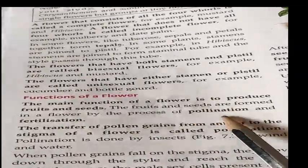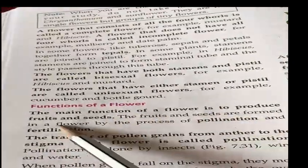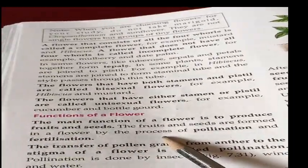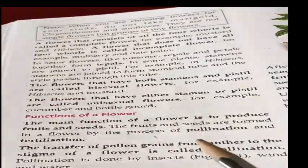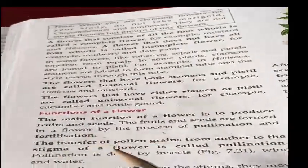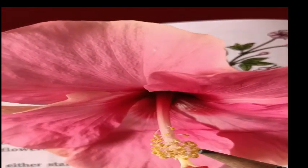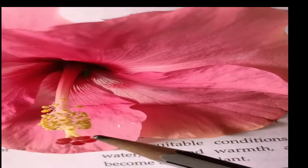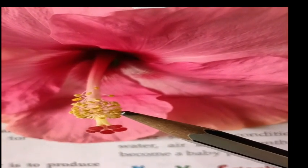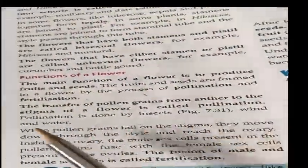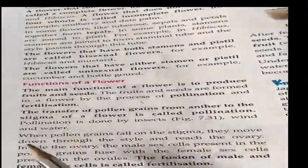Fruit and seeds are formed in the flower by the process of pollination and fertilization. The transfer of pollen grains from the anther to the stigma of a flower is called pollination. You can see here — these are the anthers. The transfer of pollen grains from the anther to the stigma is called pollination. Pollination is done by insects, wind, and water.